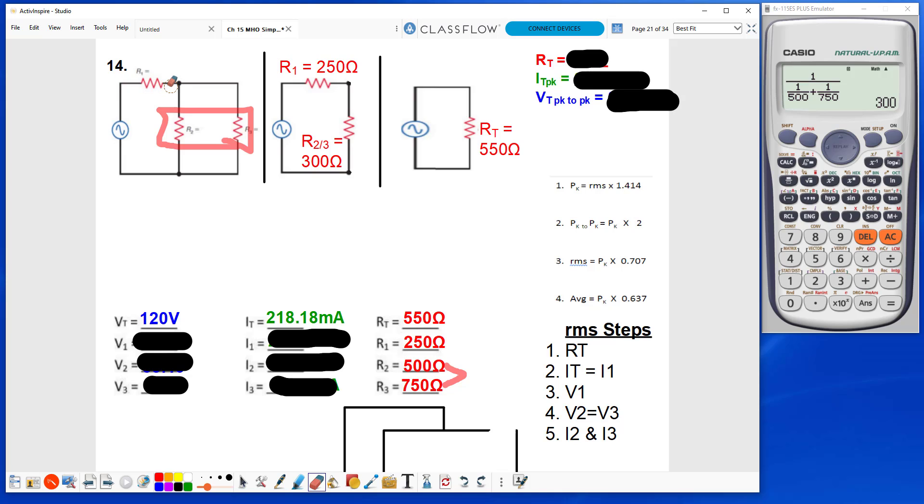R1 is on the main branch, so I1 will also be the same as IT. Now I have 2 out of 3 for V1, V1 equals 54.55 volts.